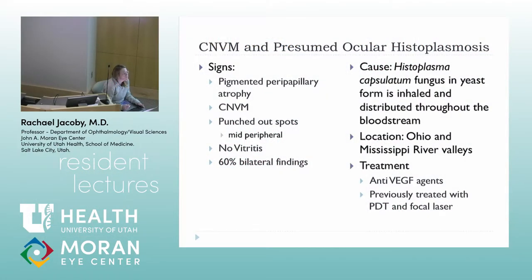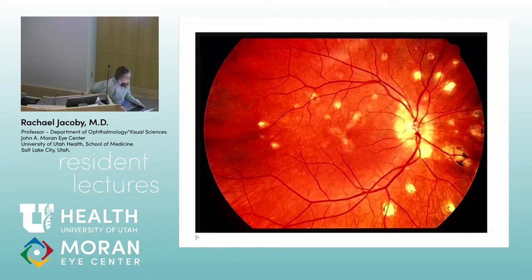Ocular histoplasmosis can be bilateral but it's not always bilateral. The other key finding is that there's no associated vitritis with it — that clear view to the retina should not have vitritis with ocular histo. This is a more typical picture showing these scattered punched-out spots.